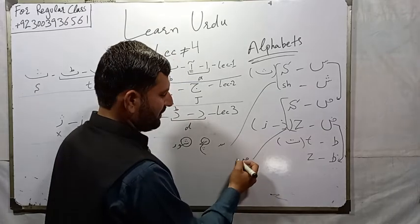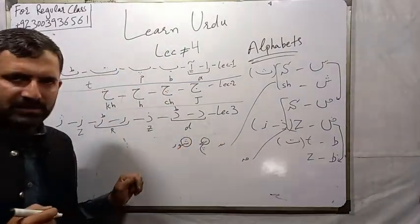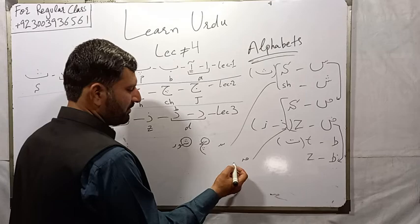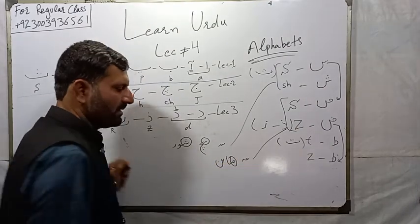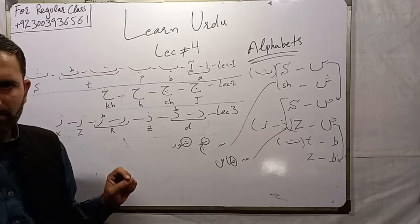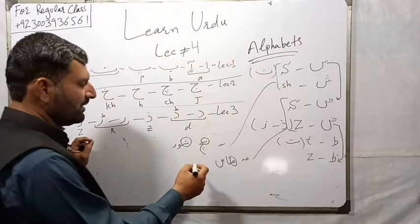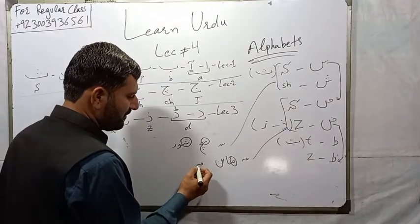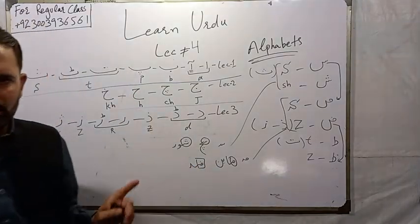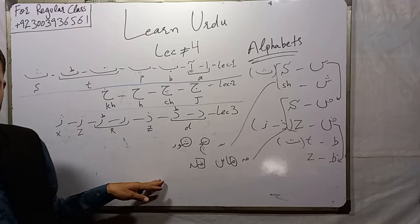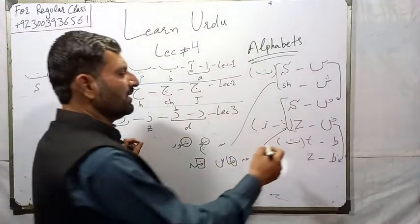Has half shape like this. Swad has half shape like this. This is Swad. Zad, this is Zad.